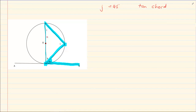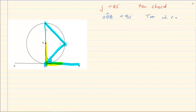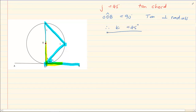Now what would K be? We have a perfect 90-degree angle here because ODB is equal to 90 degrees — tangent perpendicular to radius. O is the centre of the circle. So with a 90-degree tangent perpendicular to radius, if D1 is 45 degrees then K is equal to 45 degrees.